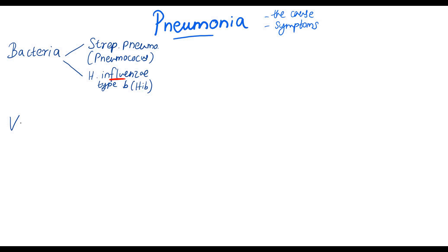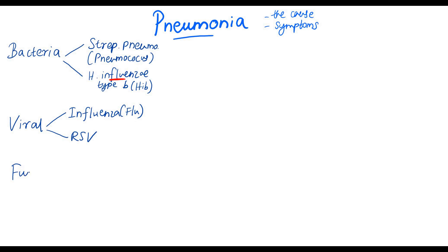Other causes of pneumonia can be viral. Common viruses that can cause pneumonia are the influenza, the flu, or respiratory syncytial virus, which is commonly seen in children. Fungus can cause pneumonia as well. For example, in HIV patients, PCP pneumonia is seen when their immune system fails.